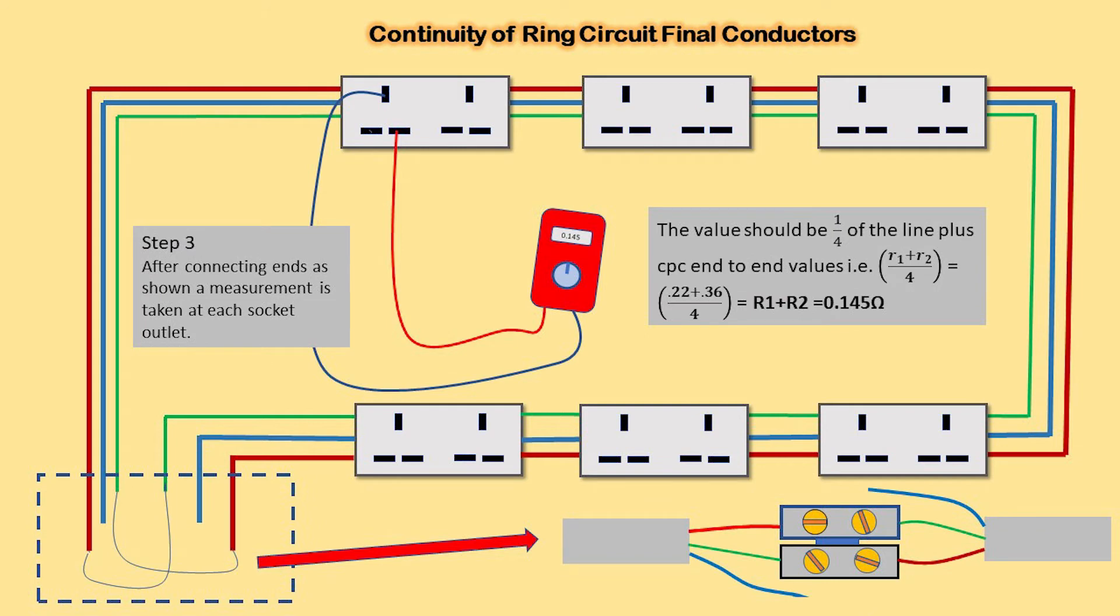Step three: after connecting ends as shown, we measure the resistance between the line and earth connections at each socket. The readings should be substantially the same, and this is the R1+R2 of the circuit which will be entered onto the certificate. As shown for this example, we have 0.145 ohms.